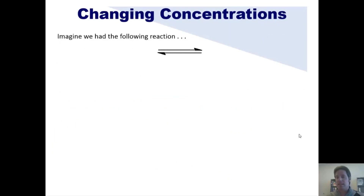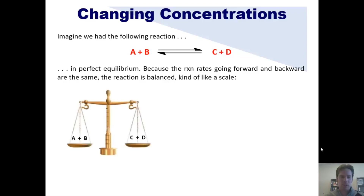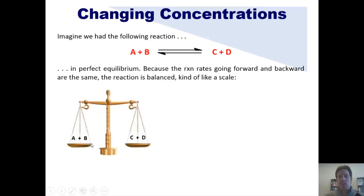We'll begin by looking at changes in concentration. Imagine we have a reaction sitting at perfect equilibrium. Because the forward and reverse reaction rates are the same at equilibrium, the reaction is balanced — kind of like a scale. Now, don't misunderstand what the scale is saying. When a reaction is at equilibrium, that does not necessarily mean the amounts of reactants and products are the same. It just means the rate going from left to right equals the rate going from right to left.